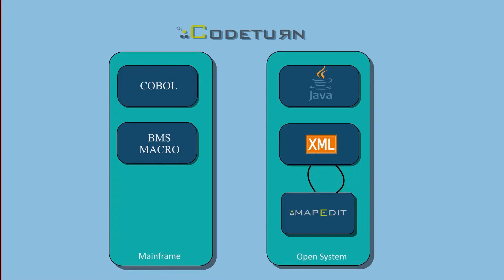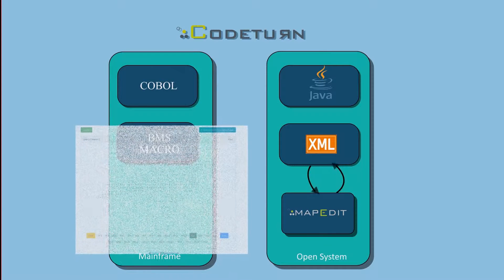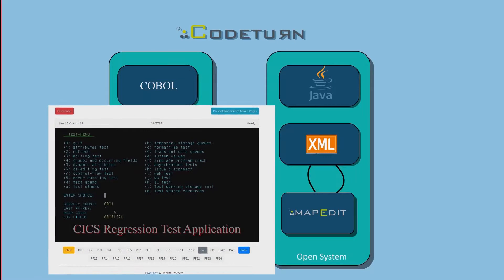During this video, we use part of our internally developed KIX regression test application that is intended to validate the quality of the CodeTurn transformation tools for COBOL and BMS.